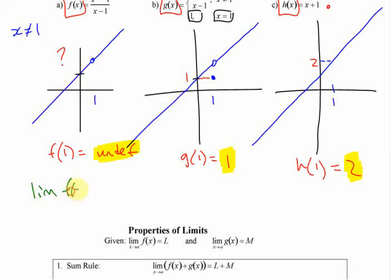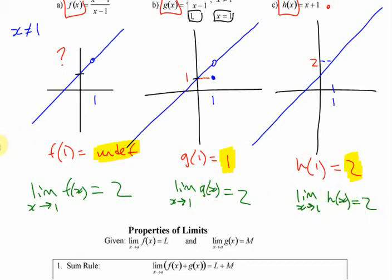The limit of f of x as x approaches 1 is 2. Even though it's undefined at that point, the limit is 2. The limit of g of x as x approaches 1 is - this one is the most uncomfortable one because it looks like it should be something else. And the last one here, the limit as x approaches 1 of h of x is 2. The limit is the same in each case. 2, 2, and 2. They're all the same even though the function is defined differently.